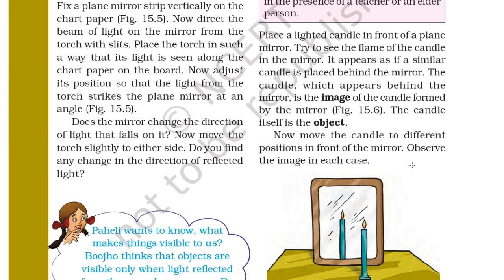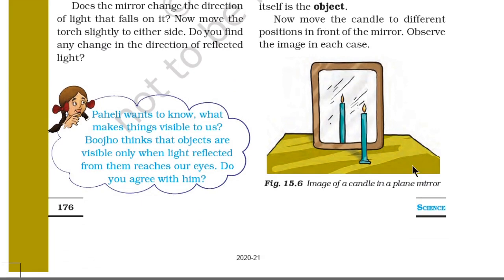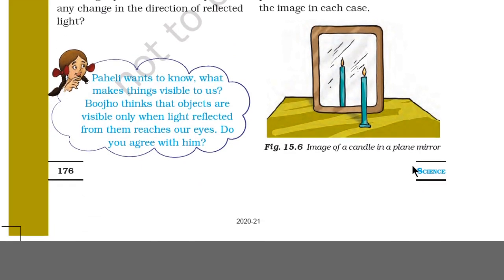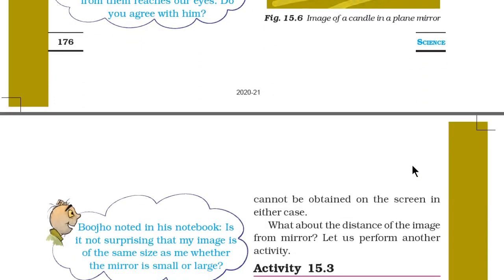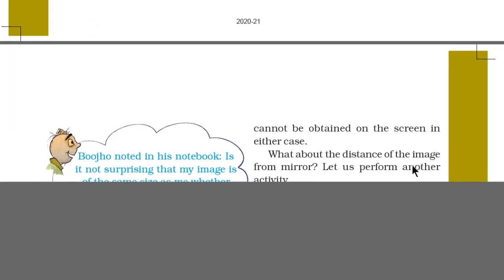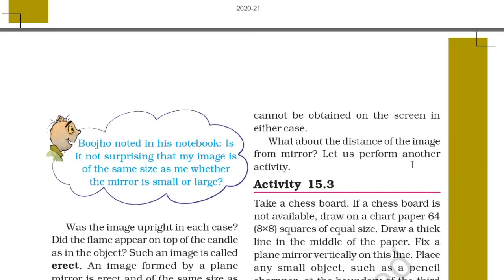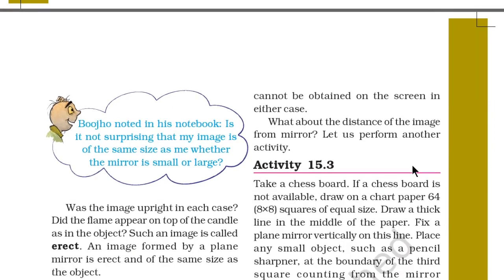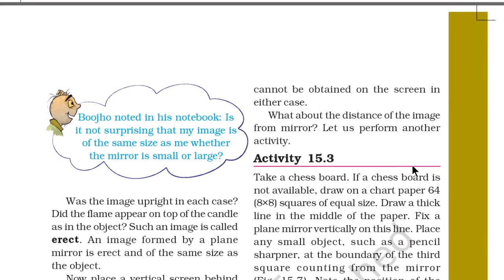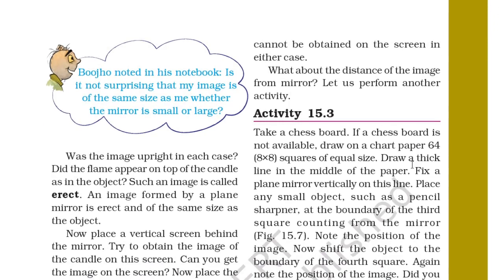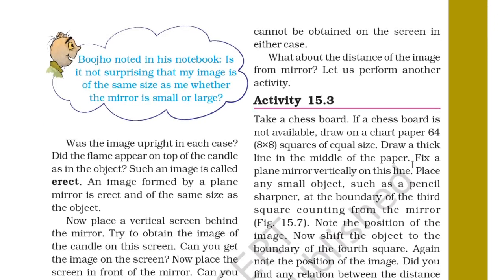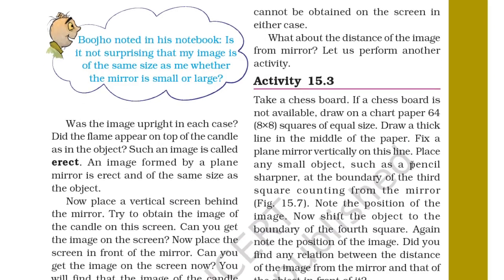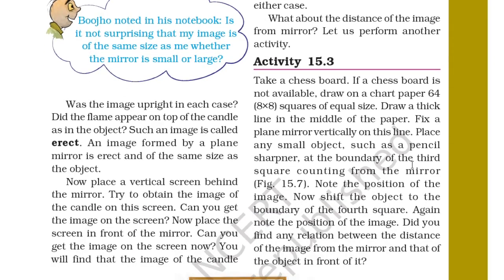Now move the candle to different positions in front of the mirror and observe the image in each case. Bojo noted in his notebook: 'Is it not surprising that my image is of the same size as me whether the mirror is small or large?' Was the image upright in each case? Did the flame appear on top of the candle as in the object? Such an image is called erect.